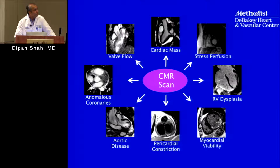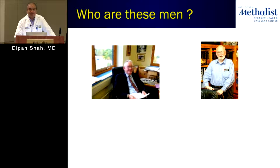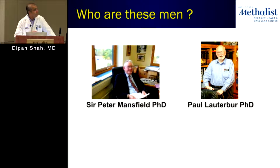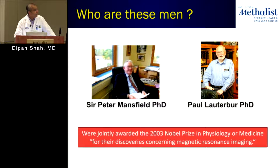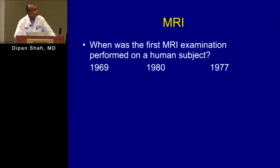Today I want to start with — who are these two guys here? They're actually two well-known individuals within the MRI community: Peter Mansfield and Paul Lauterbur. Their claim to fame is that they developed the concept of MRI and received the Nobel Prize in medicine for this in 2003. When did they do their first human experiment? 1969? 1980? 1977?